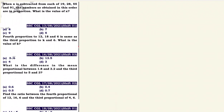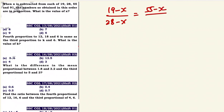Next question: when X is subtracted from each of 19, 28, 55, and 91, the numbers so obtained in this order are in proportion. What is the value of X? So we set up the proportion: 19 minus X divided by 28 minus X equals 55 minus X divided by 91 minus X.